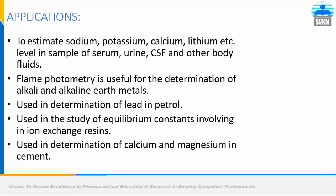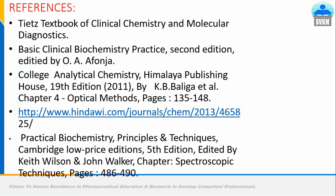Flame photometry can also be used to study the equilibrium constant involving ion exchange resins, allowing quality testing of those resins. It can determine the content of calcium and magnesium in cement, helping to test the binding efficacy and overall quality of cement. These are the references that helped illustrate all the concepts, instrumentation, and applications of flame photometry. Thank you.